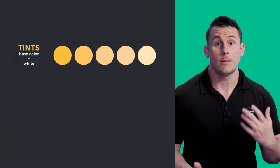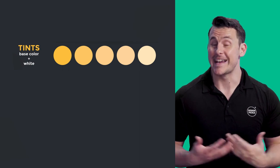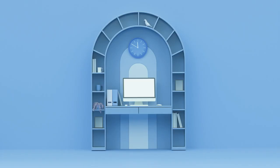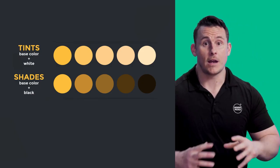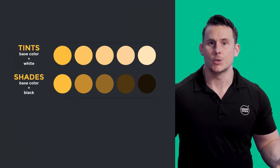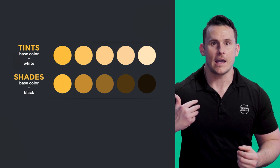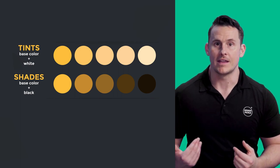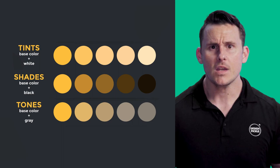Tints are created by adding white to a color, which adjusts a color's lightness. Think pastel colors like sky blue or marshmallow pink — those are tints. Shades are created by adding black to a color, which adjusts a color's darkness. A color can be dark and still vivid — think cherry red or forest green.